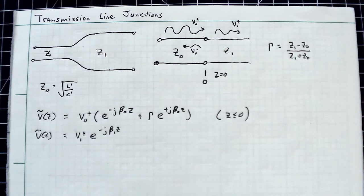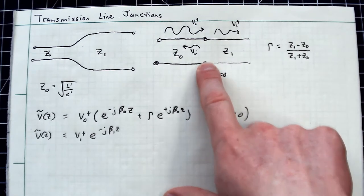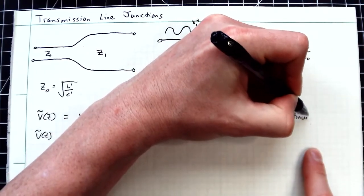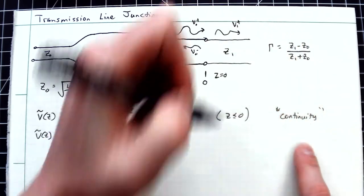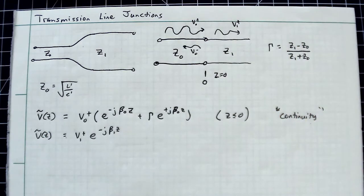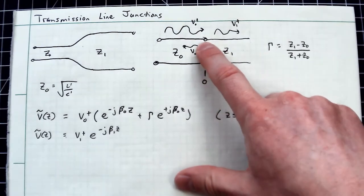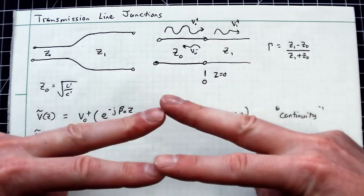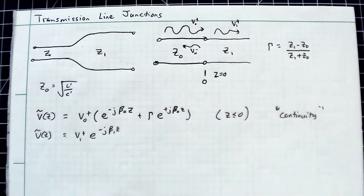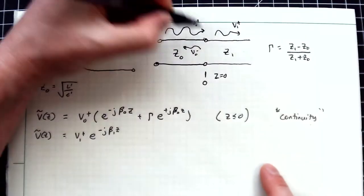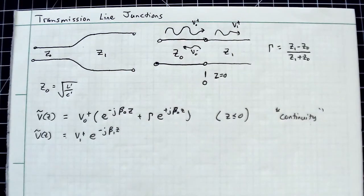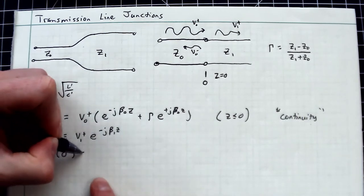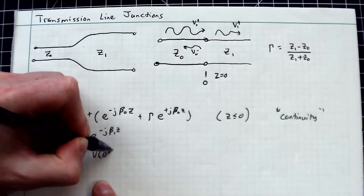At this boundary, I'm going to impose continuity on the voltage. If you've taken partial differential equations, this is very common because the voltage a tiny bit to the left cannot spontaneously change from the bit to the right. The two wires are touching, so they have the same potential at that point. Whether I'm a nanometer to the left or right shouldn't change things significantly.